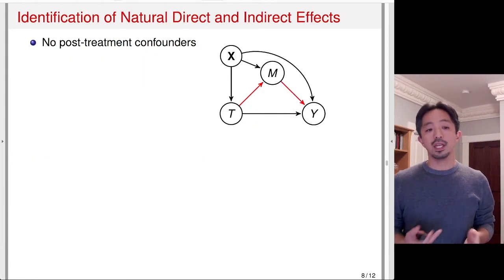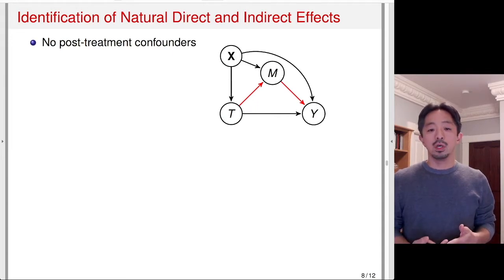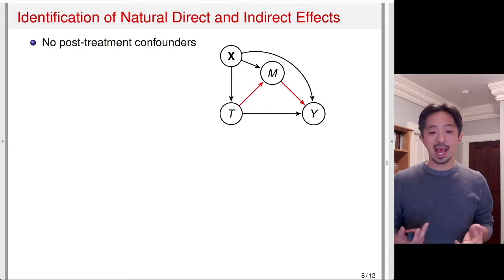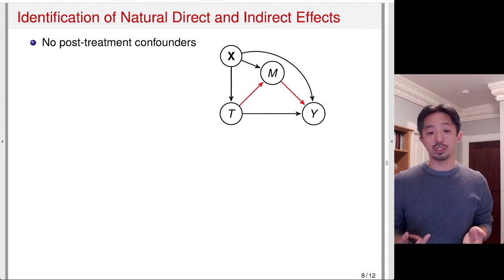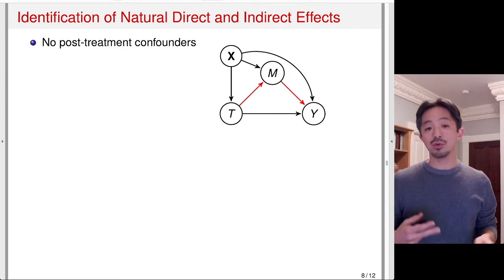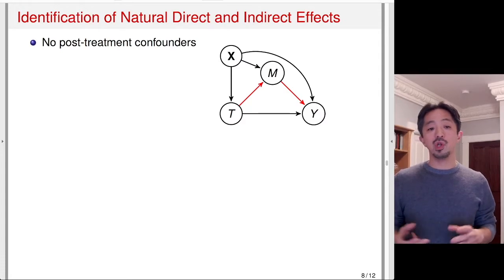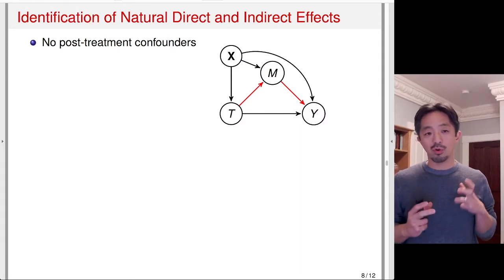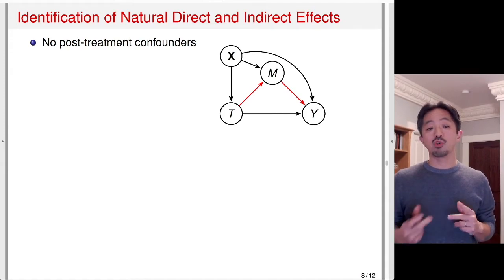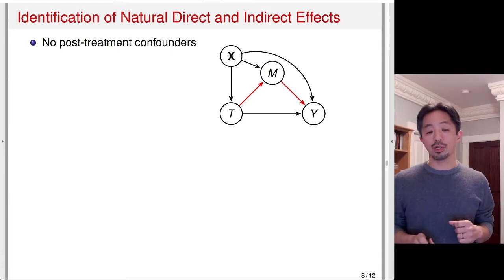What about the identification of natural direct and indirect effects? Here I have a simpler DAG which does not have post-treatment confounders. It turns out that the identification of natural direct and indirect effects, even though the total effect decomposition is very appealing, requires the assumption of no post-treatment confounders.